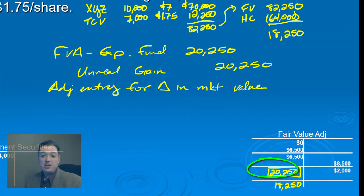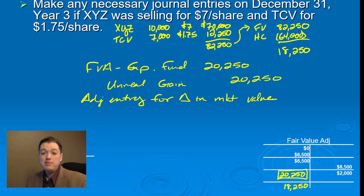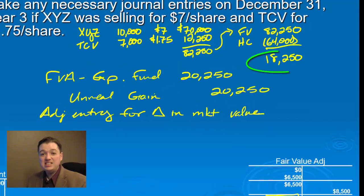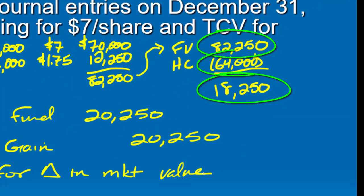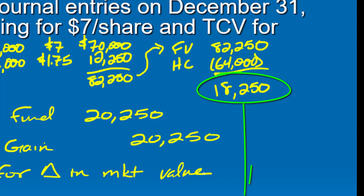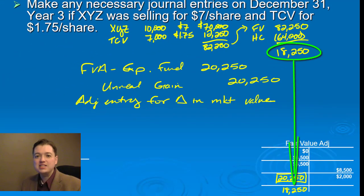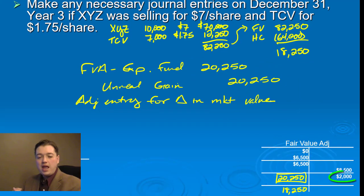Hopefully you didn't have any trouble with this, but if you did it might be because of the most common mistake — people want to take the difference between fair value and historical cost and make that the journal entry. And you can't do that. That's not what we're finding with that calculation. What we're finding is what has to be in the ending balance of our fair value adjustment account, and the journal entry gets us from the ending balance last year to the new ending balance this year.